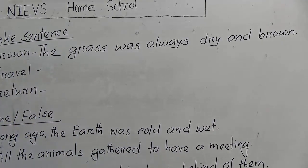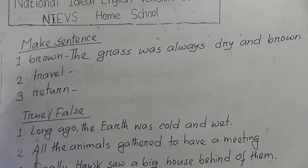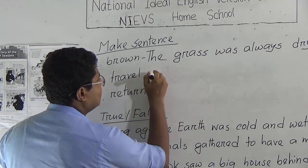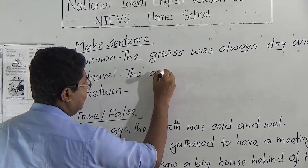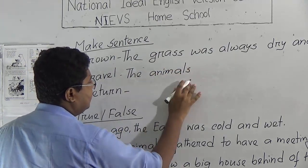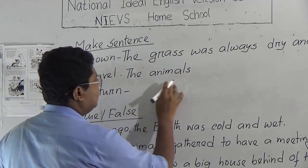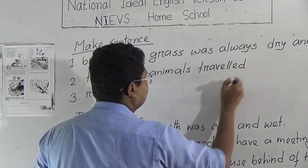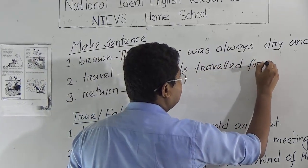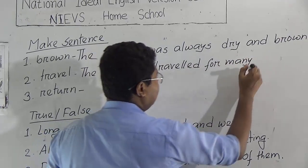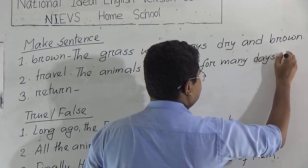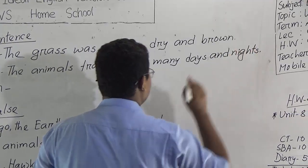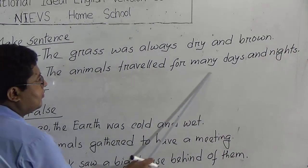Number 2: travels. We know from the story that the animals traveled for many days and nights. We can write — let's write the sentence for 'travel.' The animals — A-N-I-M-A-L-S — the animals, because there are a lot of animals there. The animals traveled for many days and nights.